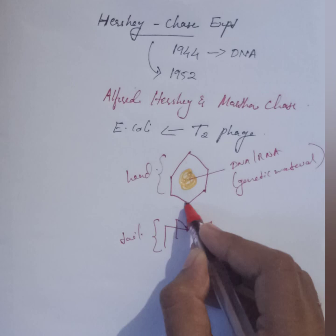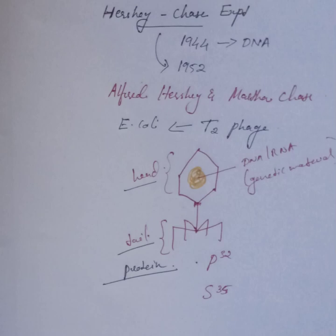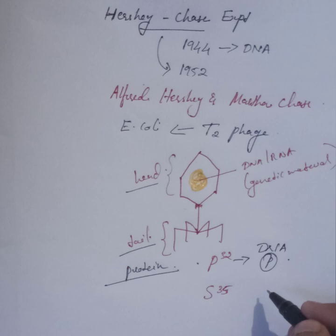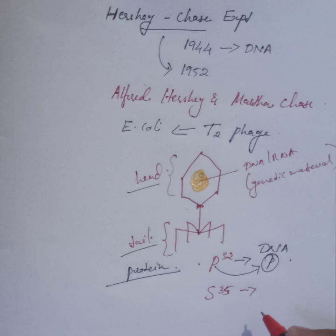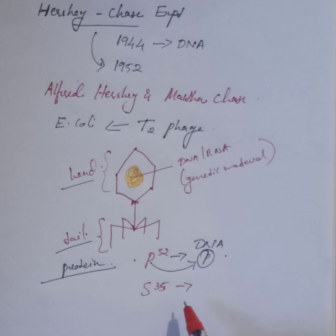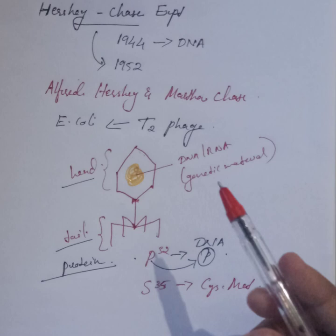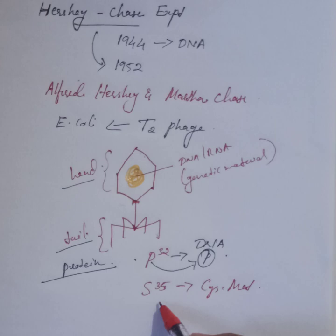For this they selected two isotopes: P32 (an isotope of phosphorus) and S35 (an isotope of sulfur). In the structure of T2 phage there is DNA and protein. Phosphate is the main component of DNA, so the function of P32 is to radiolabel the phosphate groups in DNA. Protein is made up of amino acids, and cysteine and methionine are sulfur-containing amino acids present in the protein structure, so the function of S35 is to radiolabel the cysteine and methionine in the proteinaceous structure — that is, the protein coat of T2 phage.